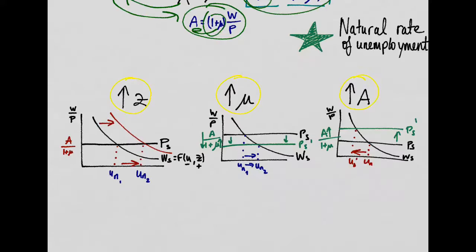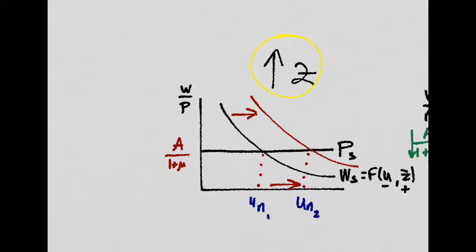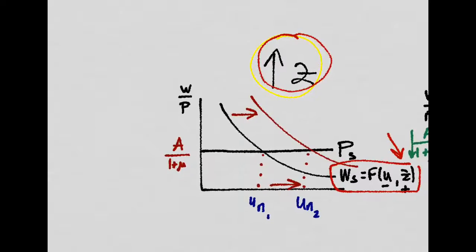Now we look at three different shocks in the labor market. Take, for example, an increase in the minimum wage or higher unemployment benefits that will increase C. Since the wage setting curve depends positively on C, and it is exogenous in this case, it will shift the wage setting curve to the right. In the new cross point, the unemployment rate, the natural unemployment rate, is higher.